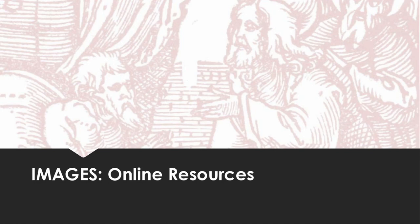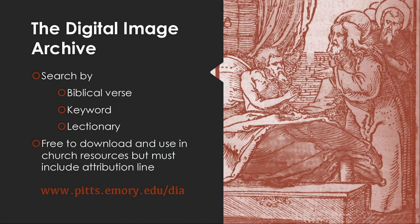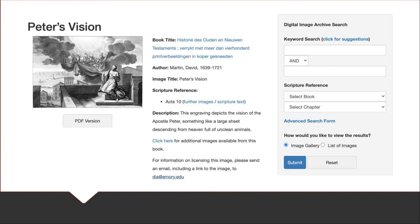Now let's move away from comprehensive resources and take a look at some image resources for you to find and reproduce while planning worship. A Pitt's-specific resource we offer is the Digital Image Archive. This has digitized images from the library's rare books — woodcuts, engravings of biblical scenes, Latin mottos, diagrams, maps, and even more. Most are in the public domain because the copyright has certainly expired on these very old books. You can download images as a JPEG or PDF, find more information about the book, and there's also a link at the bottom for instructions on attribution, which should say something like 'digital image provided courtesy of Pitt's Theology Library.'